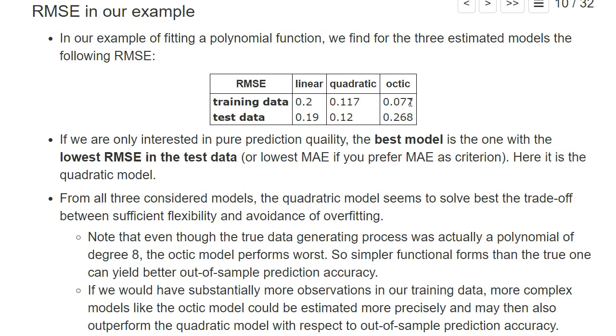We see what we have already seen in the graph before, that in the training data set, our most flexible specification, the octic specification, has the lowest root mean squared error. However, important for machine learning is not how well you fit the training data set, but how well you predict out of sample.